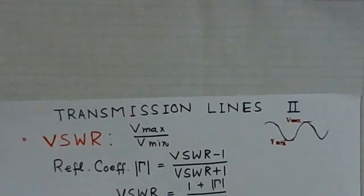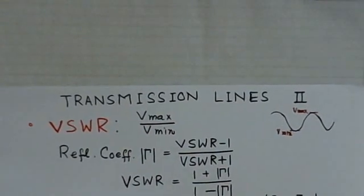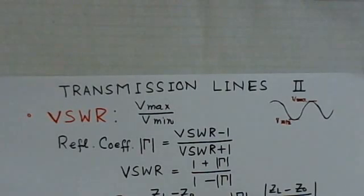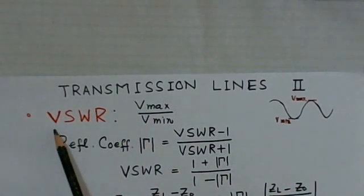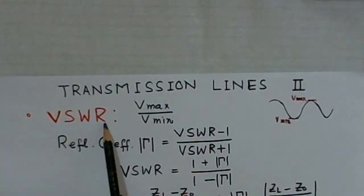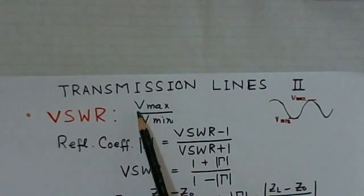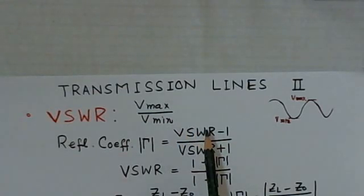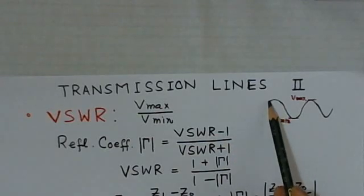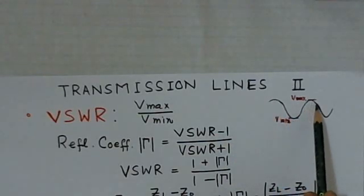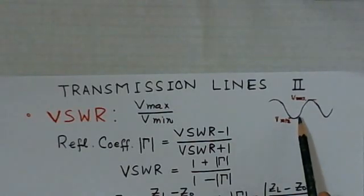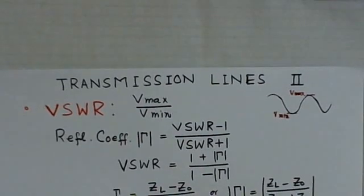one of the very important parameters for the Transmission Lines is the Voltage Standing Wave Ratio, VSWR. This VSWR, Voltage Standing Wave Ratio, is defined as Vmax over Vmin of the standing waves which are formed on the Transmission Line. If you see here, this is the standing wave which is formed. If you determine Vmax and Vmin, you can find out the Voltage Standing Wave Ratio on the line.